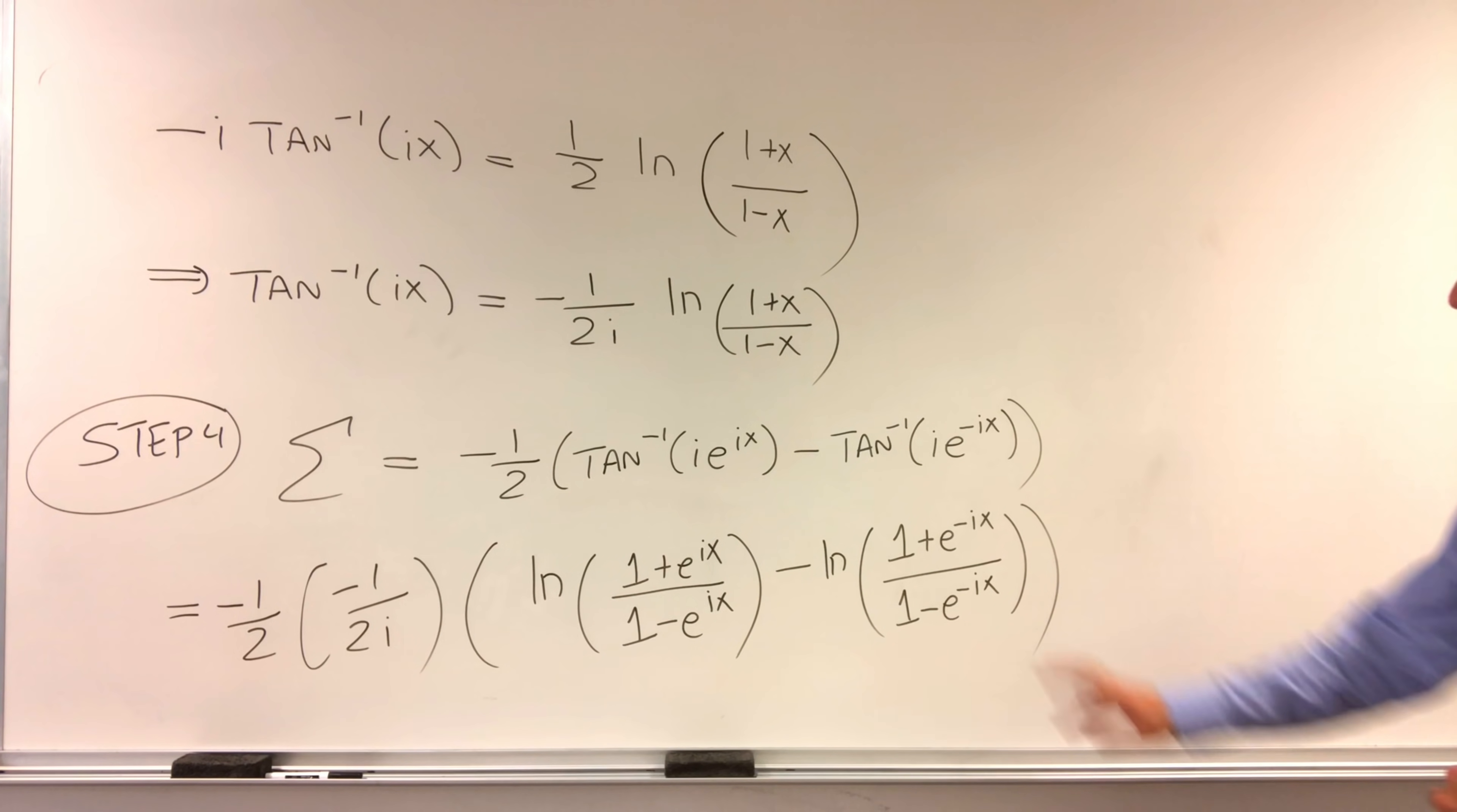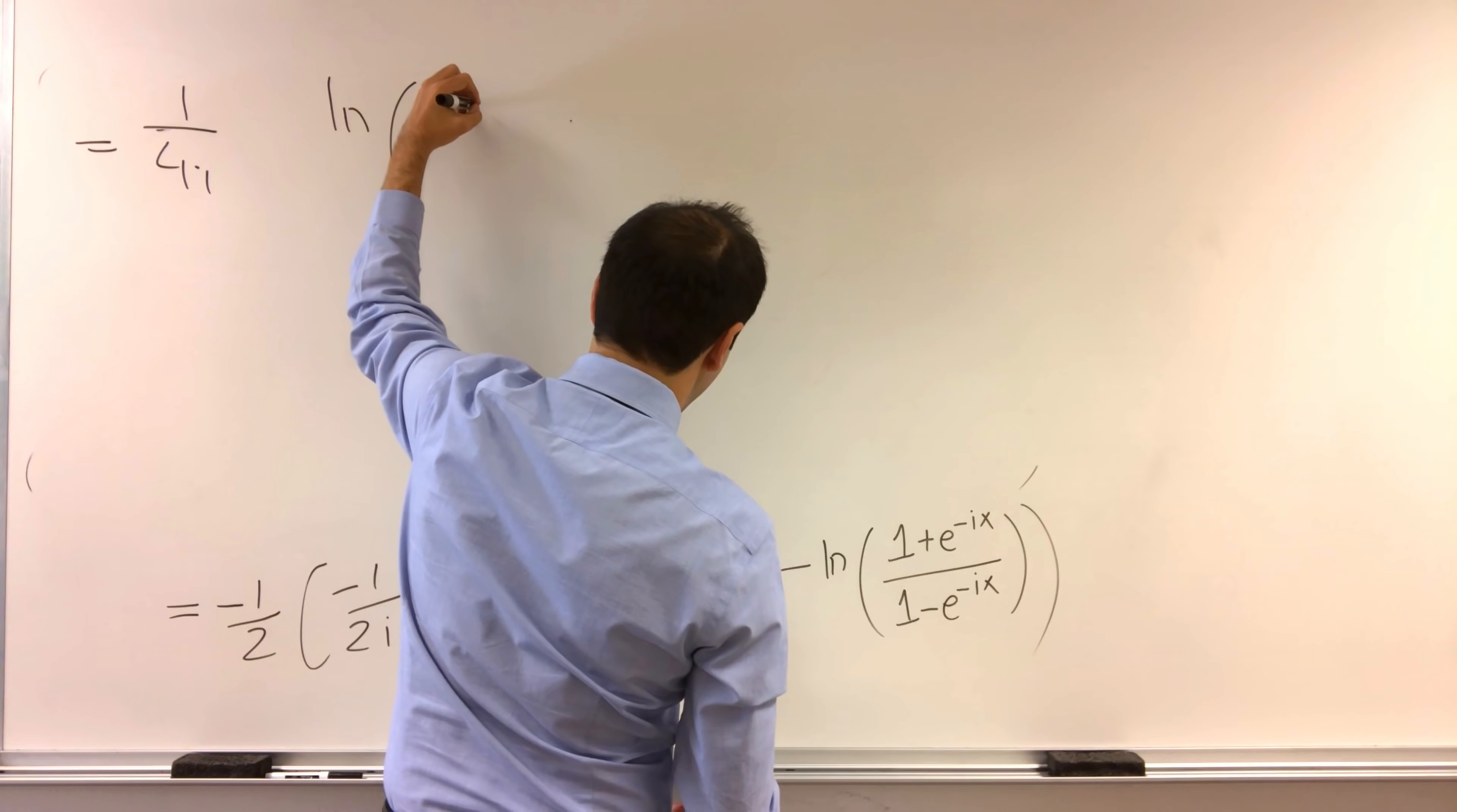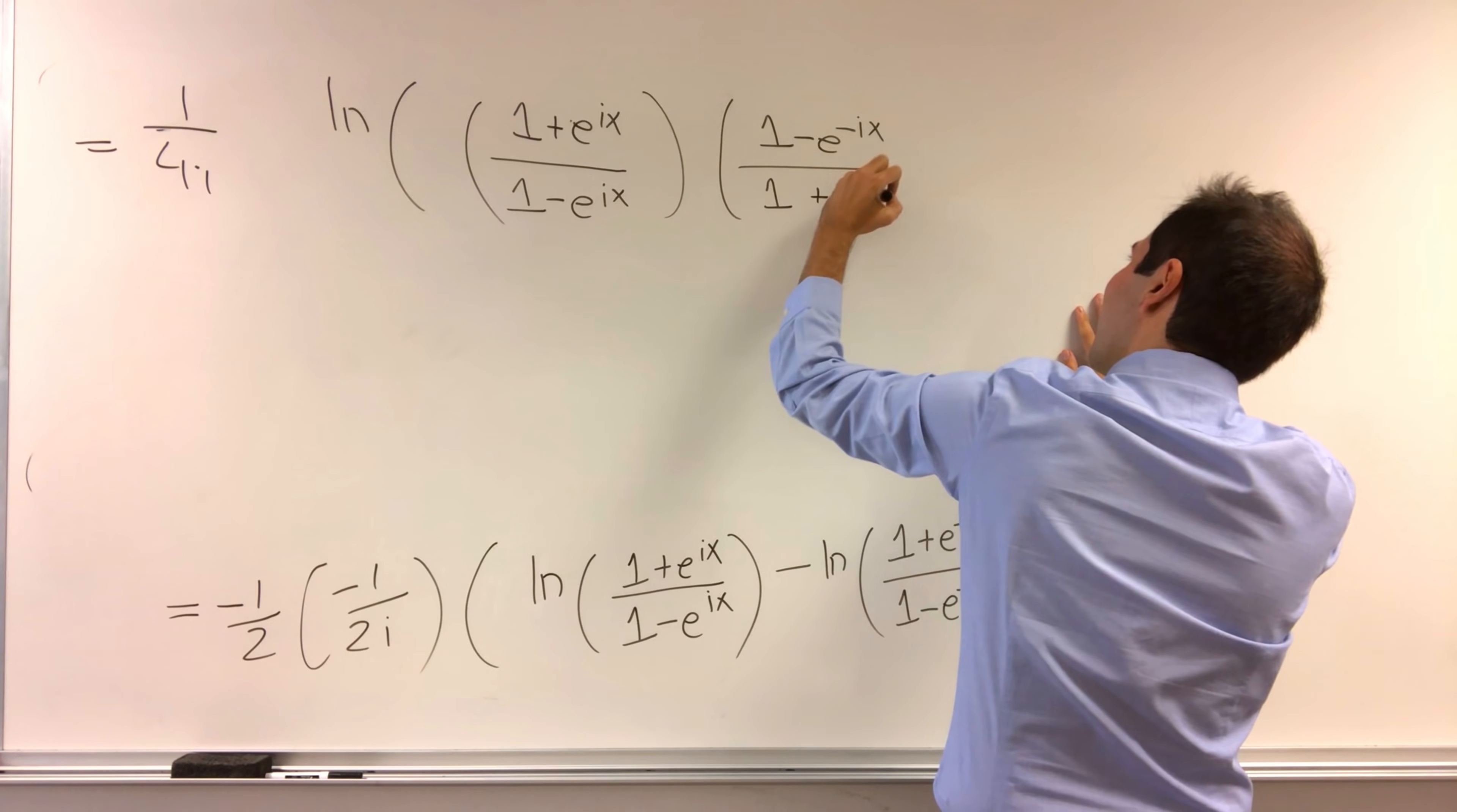Let me check. Yes. And now we can just use the usual rules of ln. So ln of a minus ln of b is ln of a over b. So what we get is 1 over 4i. Let's see. So ln of 1 plus e to the ix over 1 minus e to the ix times 1 minus e to the minus ix over 1 plus e to the minus ix.